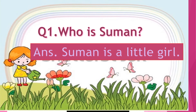Question number 1: Who is Suman? The answer is, Suman is a little girl. How to write Suman? S-U-M-A-N. Suman is a little girl.